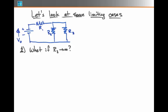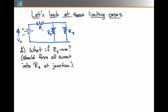That's like saying R3 was a switch that we would open such that it would not allow any current. Well, in this case, I would imagine it would force all the current at the junction to go into R2.